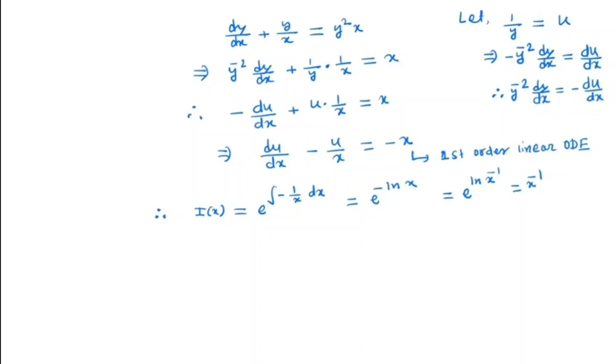So in the next step, multiply I(x) to both sides of this equation. We get d/dx(u·x^(-1)) is -x times x^(-1) which is -1.